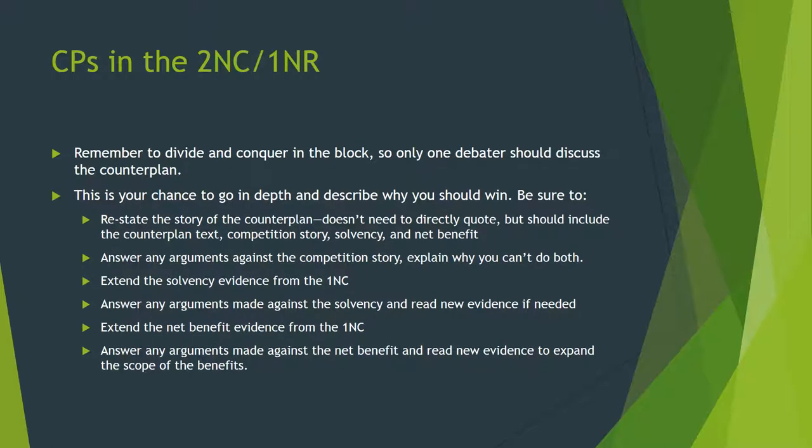In the block, it's important to remember to divide and conquer, so only one debater should discuss the counter plan. This is your chance to go in depth, describe why the counter plan is awesome, and win the debate. First, restate the story of the counter plan — include the counter plan text, explain why it's different, how it will work, and why it's better. Make sure to answer any arguments against the competition story, explaining why you can't do both. Extend your solvency evidence from the first negative constructive, answer any solvency arguments the affirmative makes against you, and read new evidence if you have to. Extend the net benefit — answer any arguments against it and read new evidence to expand the scope of the benefits.